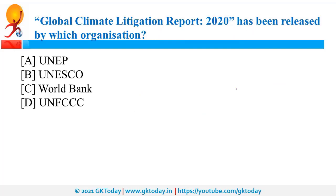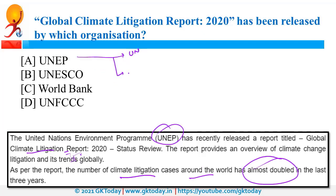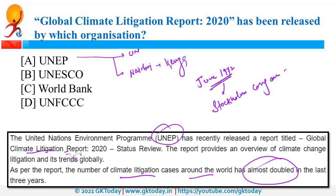The Global Climate Litigation Report has been released by UNEP — the United Nations Environment Programme. As per the report, the number of climate litigation cases around the world has almost doubled. The headquarters of UNEP is in Nairobi, Kenya, and it was founded in June 1972 as a result of the Stockholm Conference on Human Environment.